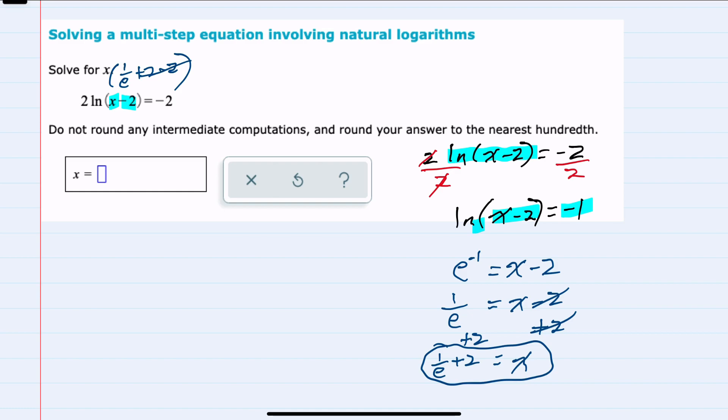And since e is a positive number, 1 over e is a positive number. So we can move forward with 1 over e plus 2 being the value of x.